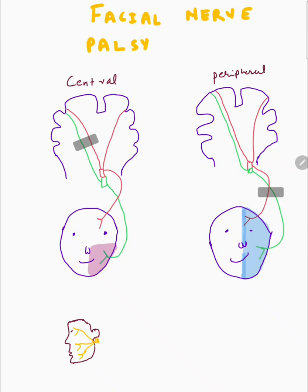The lower face is only supplied by the contralateral fibers — the contralateral upper motor neuron fibers, also called the supranuclear fibers. So if this is the facial nerve nucleus on this side, the fibers from the contralateral cortex will come here and supply the lower motor neurons, which then supply the lower face.